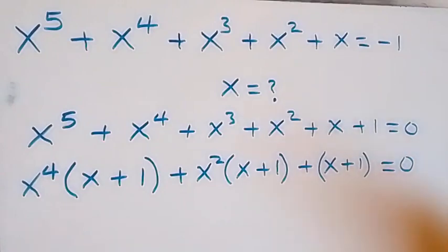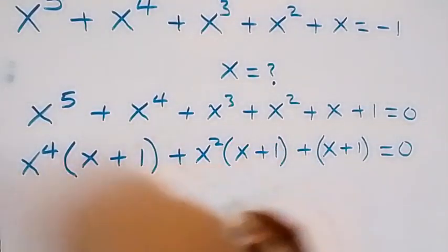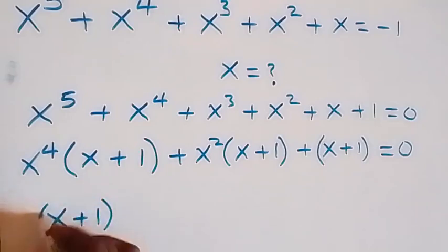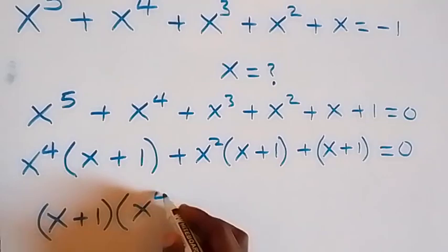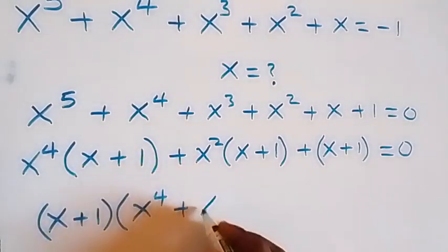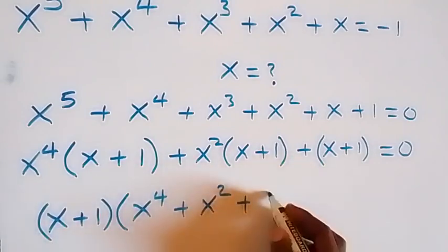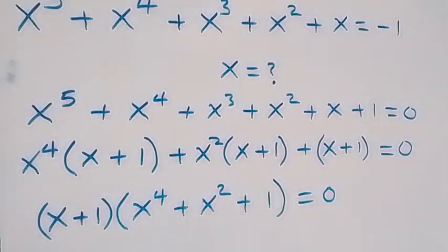Before we continue, please subscribe to this channel and turn the notification on. Thank you. Then from here, we have x plus 1 common, and when we factor it out, we have x plus 1 into bracket. What is left? We have x raised to power 4, then plus x squared, then plus 1, which is equal to 0.